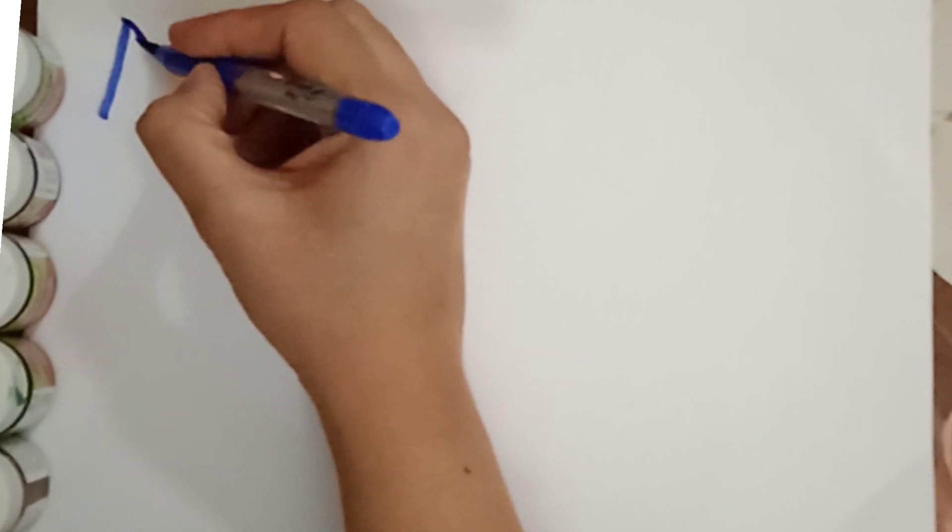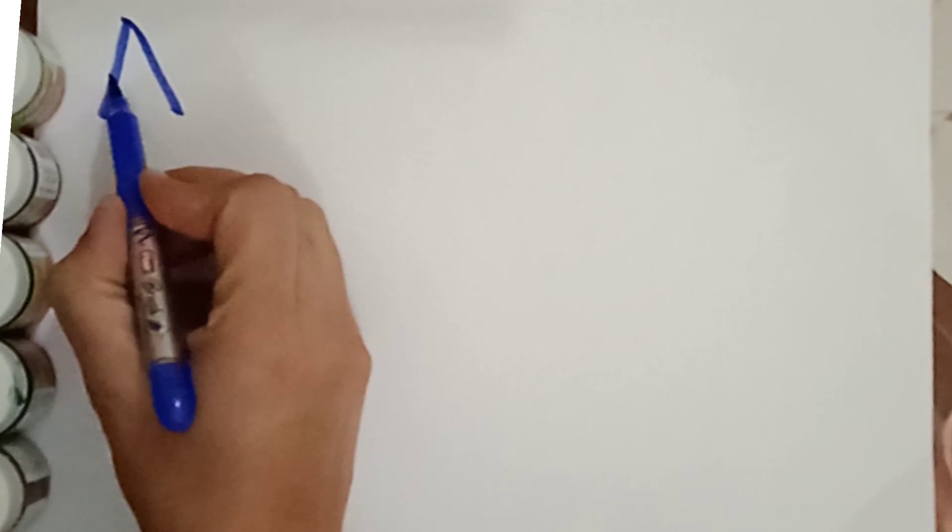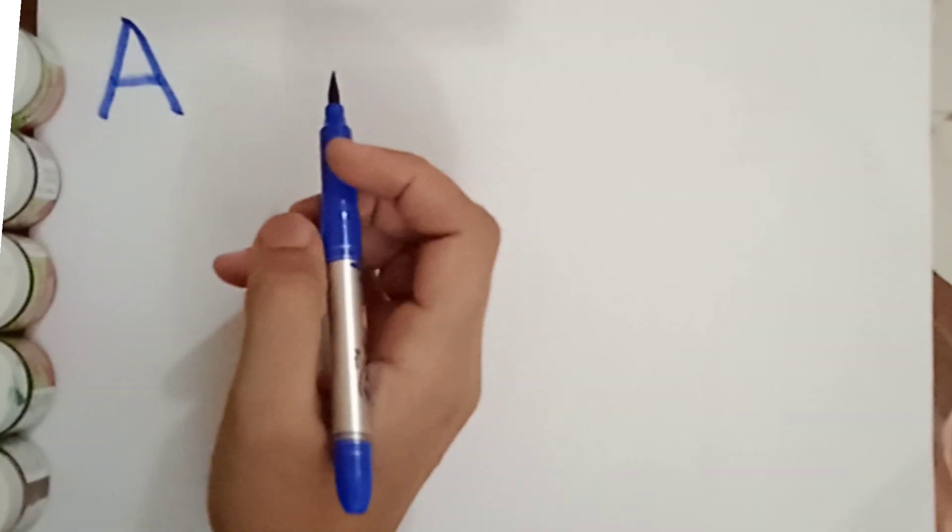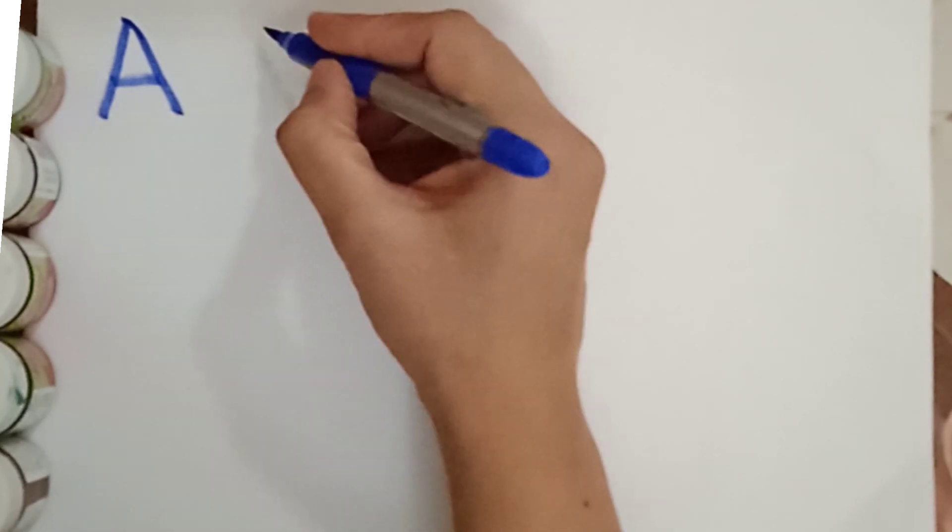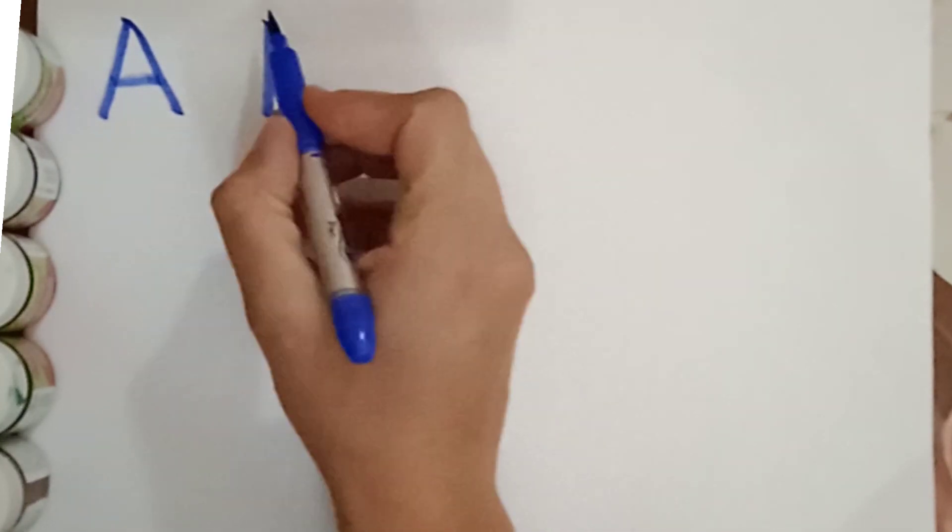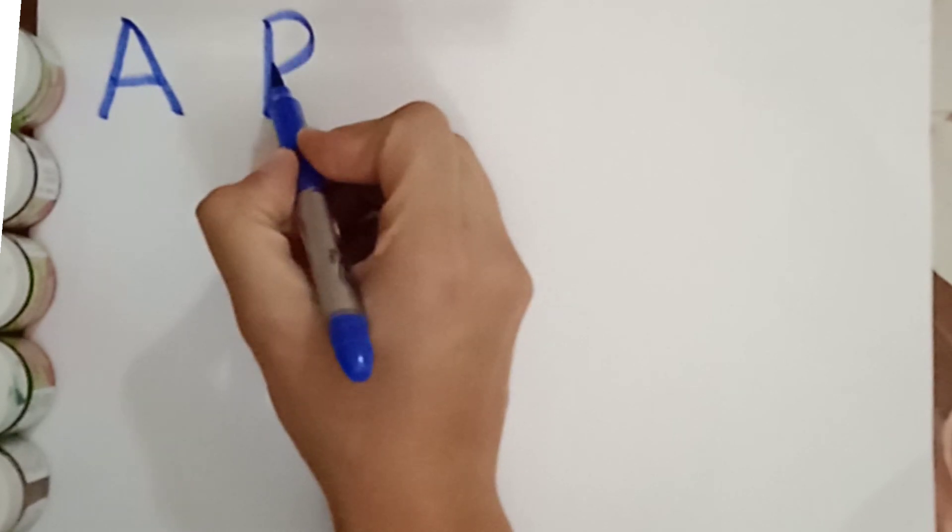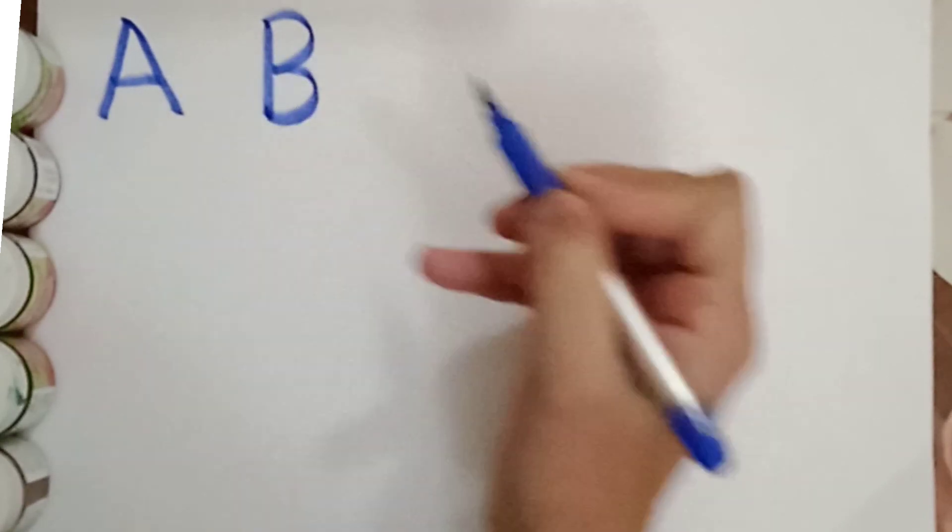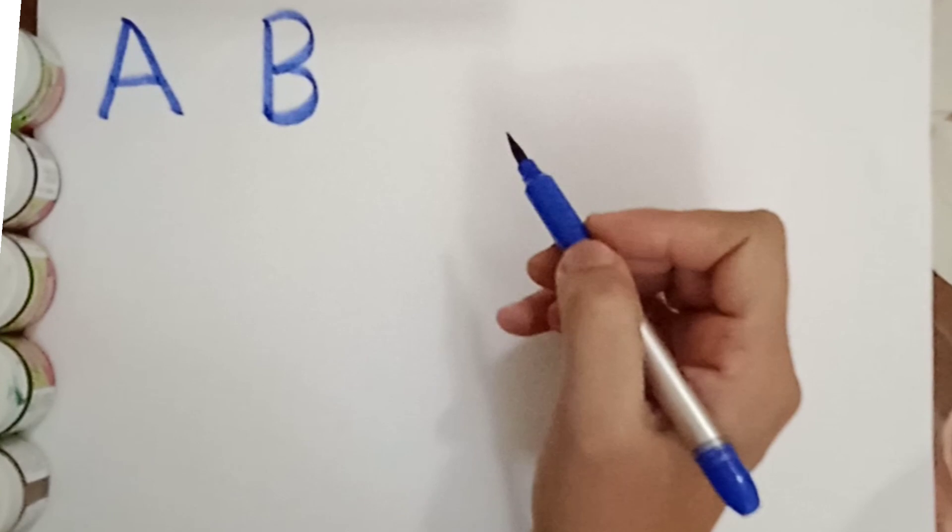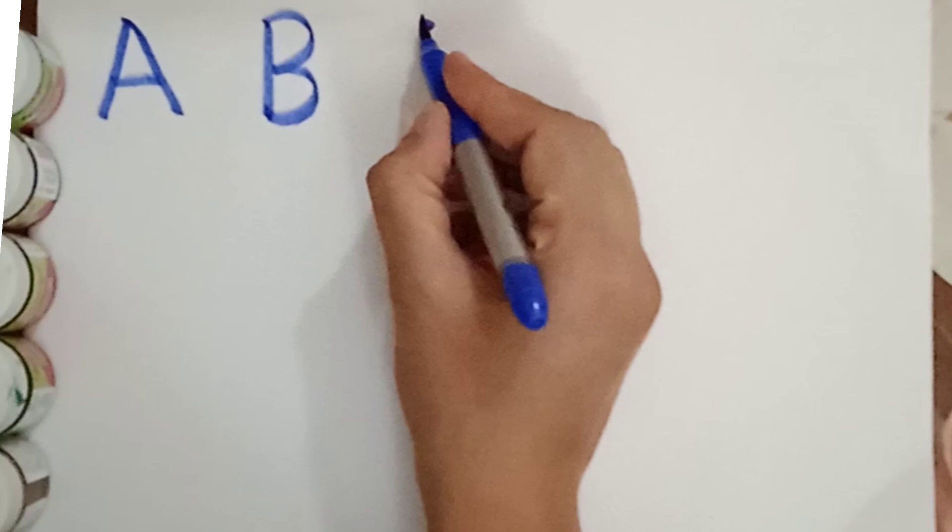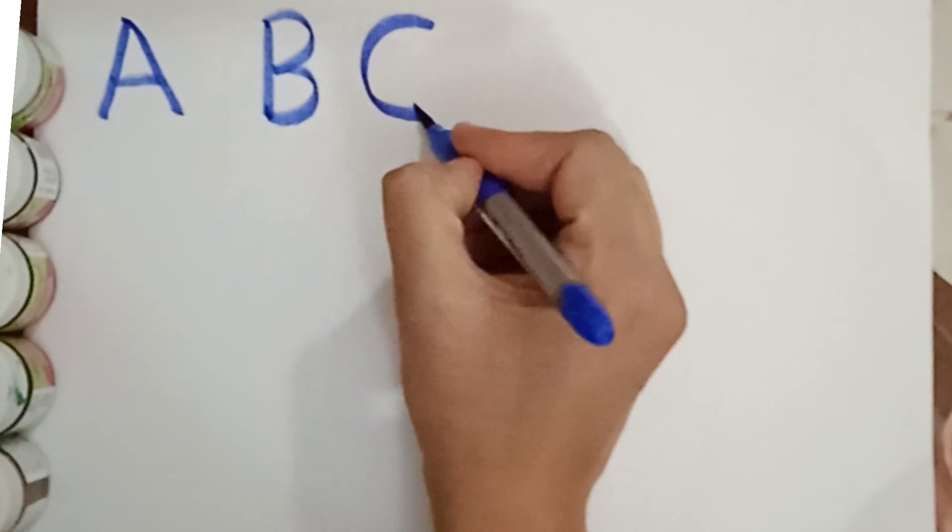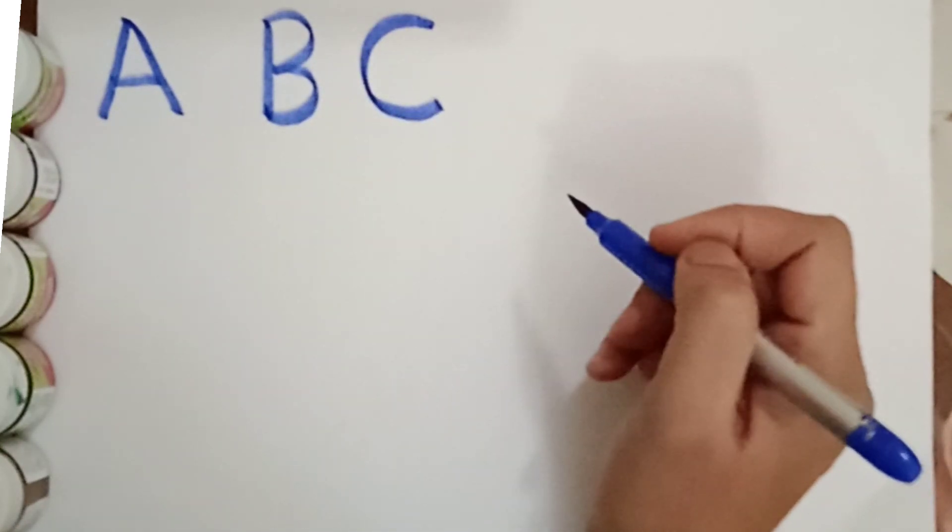Letter A. A for apple. A for apple. Letter B. B for ball. B for ball. What comes after B? C. C for cat. C for cat.